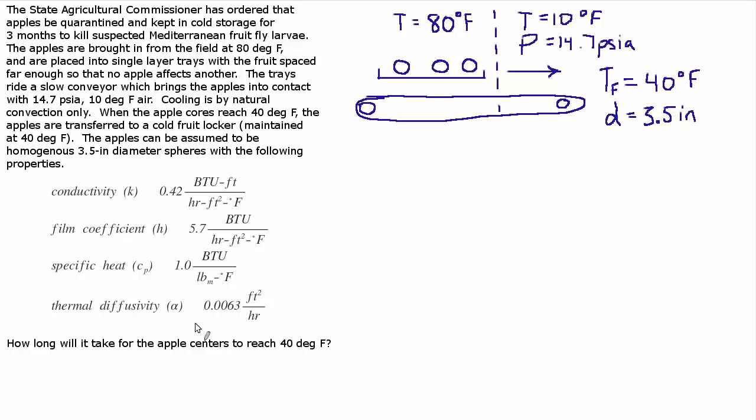The question is how long does it take for the centers to get down to 40 degrees when they're in that 10 degree environment having been taken out of an 80 degree environment. They place them on a tray spaced out far enough so there's no interaction between them and there's no forced convection. This is a slow conveyor so it's not like you have some velocity of air blowing over the apple. It's just natural convection.